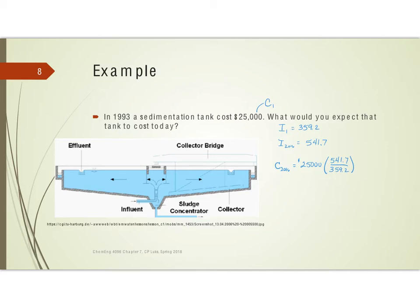If you multiply these out, we get a specific number. All we do is take the $25,000 and multiply by the new index over the old index — 541.7 divided by 359.2. Because it's a cost estimate, my rule of thumb is to keep one extra digit on preliminary numbers before getting to the final project total. So $37,700 is a good estimate for the sedimentation tank today. In our next lesson, we're going to look at a project where the data has changed in both size and time. Thank you very much for your time.